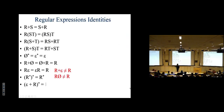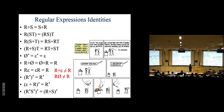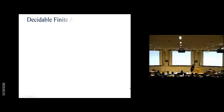We also talked about identities for regular expressions. There's a distributive law — concatenation distributes over union. Concatenation is associative but not commutative. Union is commutative and associative. The identity element with respect to union is the empty set; the identity element with respect to concatenation is the empty string. For fun, you could prove that r** equals r*.